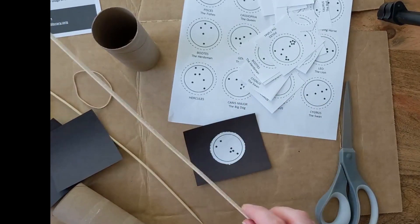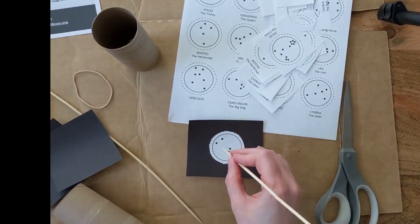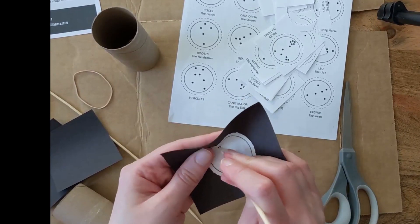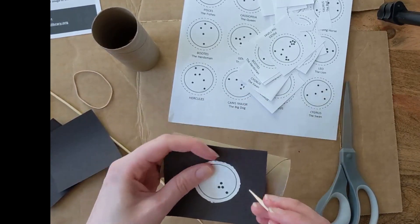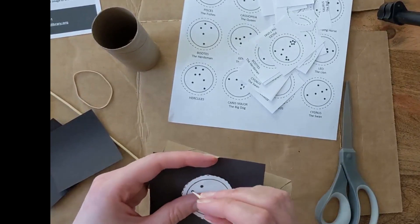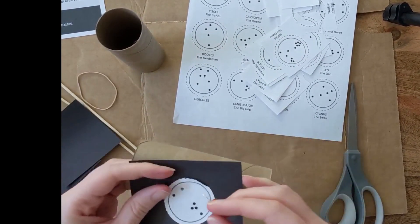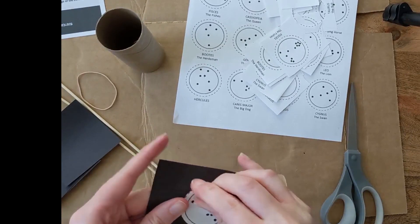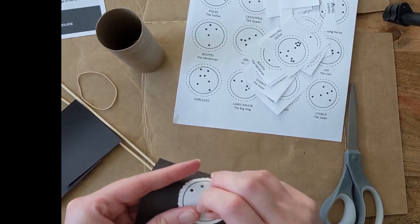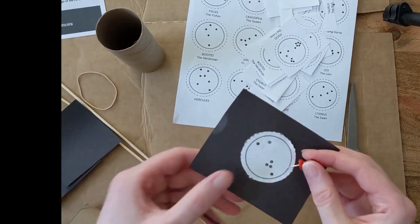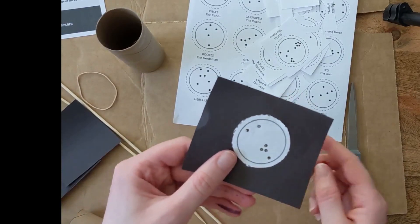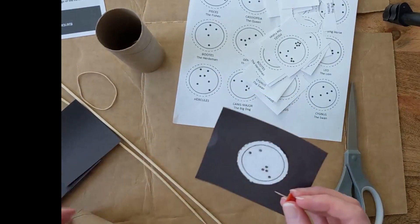Now we're going to poke the holes through at each of the dots. It might help to have something a little bit sturdier behind it so you don't poke yourself and it just makes it a little bit easier to poke the hole through. All right, so my skewer wasn't working so I went and got a push pin. So I don't know if you can see the holes through there, but they're pretty tiny so I'm just going to make them a little bit bigger.